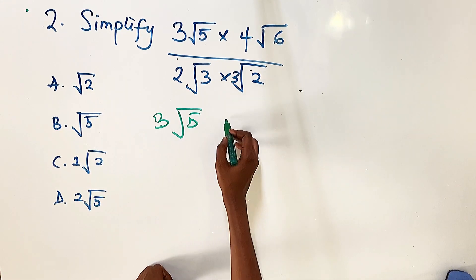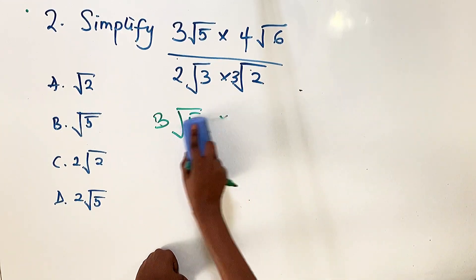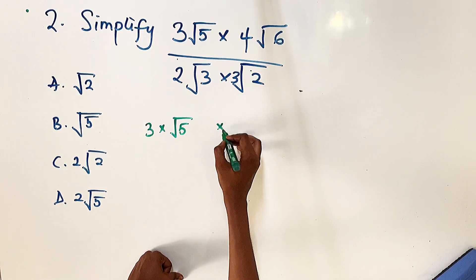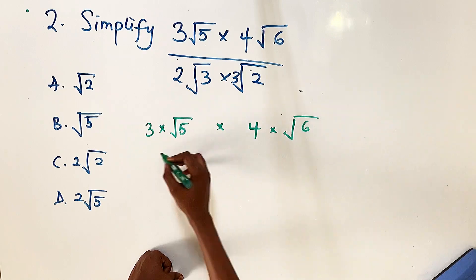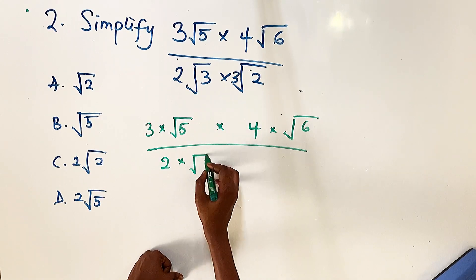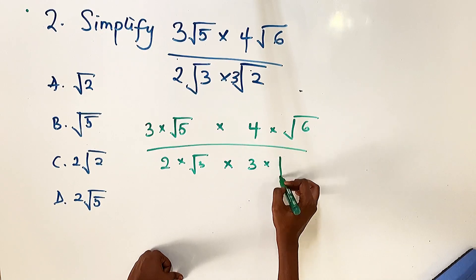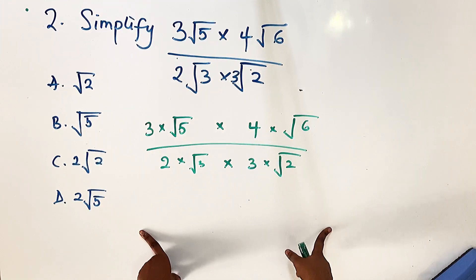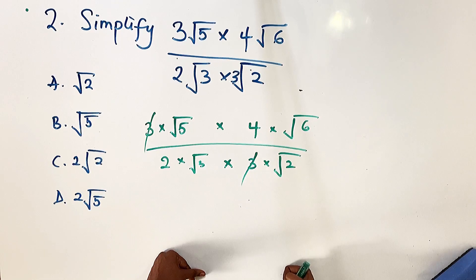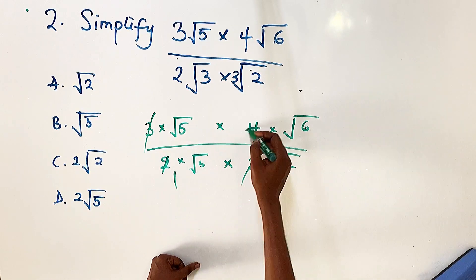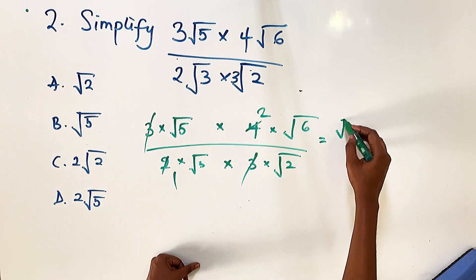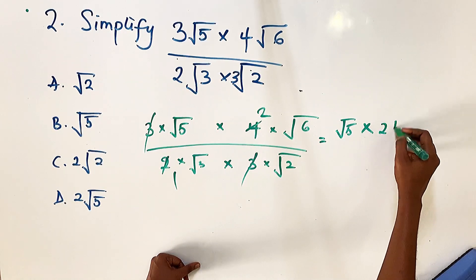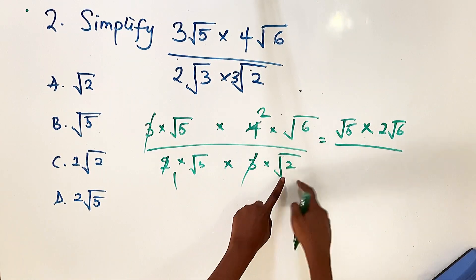Let's break this down further. We have 3 times root 5 times 4 times root 6, all over 2 times root 3 times 3 times root 2. When dividing we can cancel common values: 3 cancels with 3, and 4 over 2 gives 2. So we're left with root 5 times 2 root 6 on top, and root 3 times root 2 on the bottom.